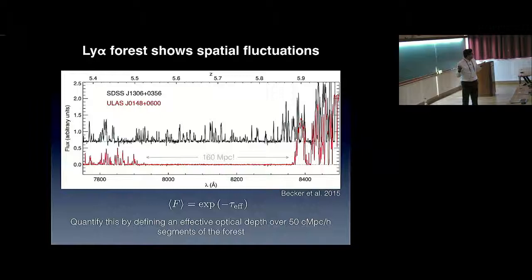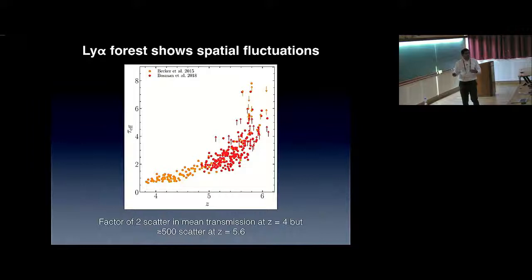The fact that the Lyman-alpha forest shows spatial fluctuations can be recast as the statement that the effective opacity shows a scatter at a fixed redshift. This plot illustrates this. What is shown on the vertical axis is this effective opacity in the redshift range of four to six. You see that towards the low redshift end of this interval, these points are pretty closely bunched together, but as you go to higher and higher redshifts they fan out in a large scatter. The scatter in the mean transmission here is about a factor of two, but it's about a factor of 500 here. This is the puzzle: there is a large scatter in Lyman-alpha forest effective opacity, especially towards the higher redshift end of the data.